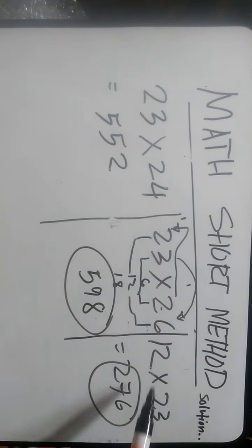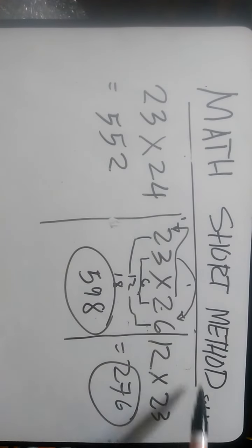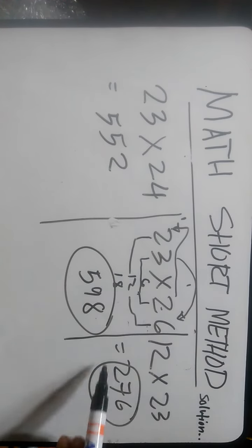Why? Because 3 times 2, 6. Then 2 times 2, 4. 1 times 3, 3. 4 plus 3, 7. Then 2 times 1, 2.